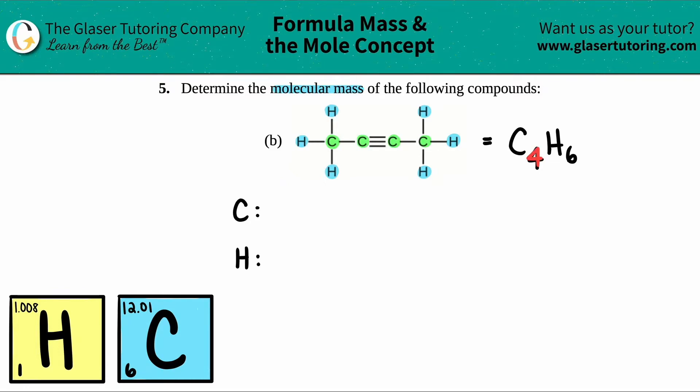You say how many of each you have. So for example, for carbon, we just said that we had four carbons. And for hydrogen, we said that we had six. Now all you have to do is just multiply these values by the mass that you see on the periodic table.